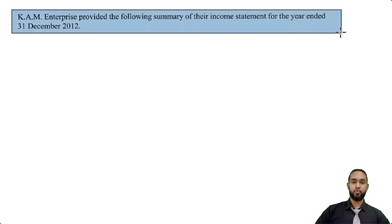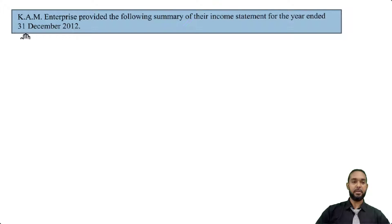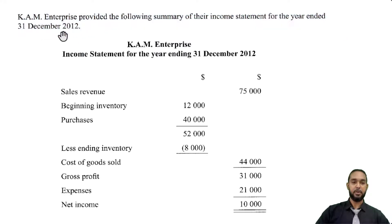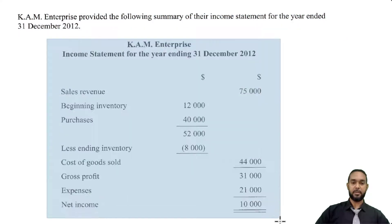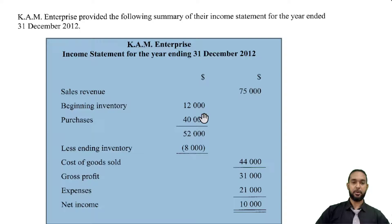So the question reads: KAM Enterprise provided the following summary of their income statement for the year ended 31st December 2012. They give us an income statement down here, so let's take a look through it.